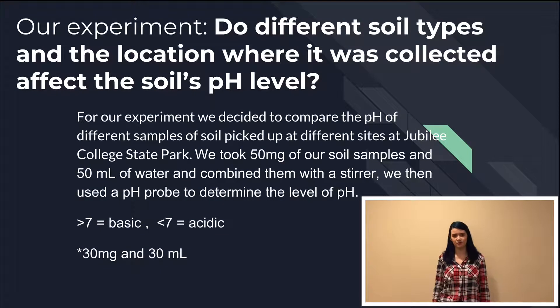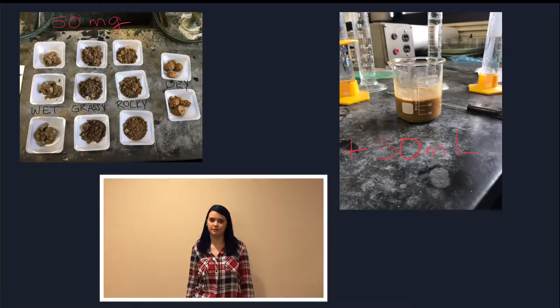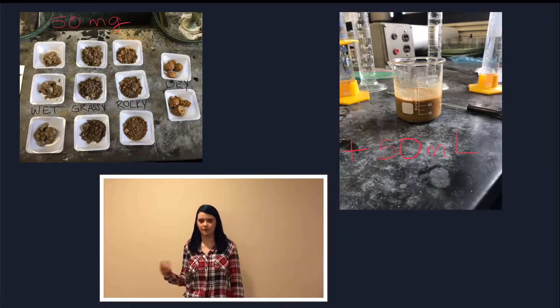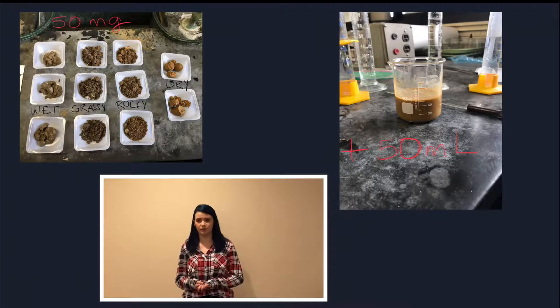For our experiment, we went to Jubilee State Park and collected different soil samples from different sites of the park. For our actual experiment, we took 50 milligrams of the soil and mixed it with 50 milliliters of water and used a pH probe to determine the actual pH level.